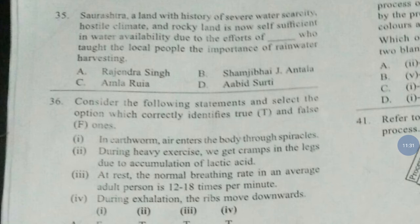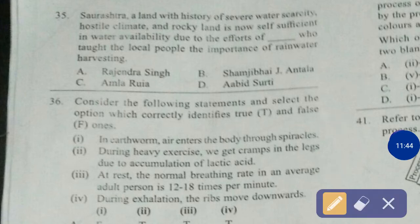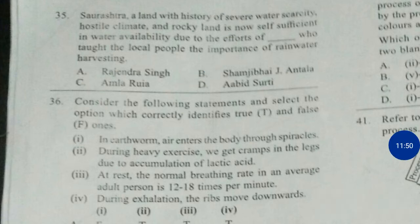Question number 35. Saurashtra, a land with history of severe water scarcity, hostile climate and rocky land, is now self-sufficient in water availability due to efforts of blank, who taught the local people the importance of rainwater harvesting. The correct answer is option number B — Shamji Bhai J. Antella.